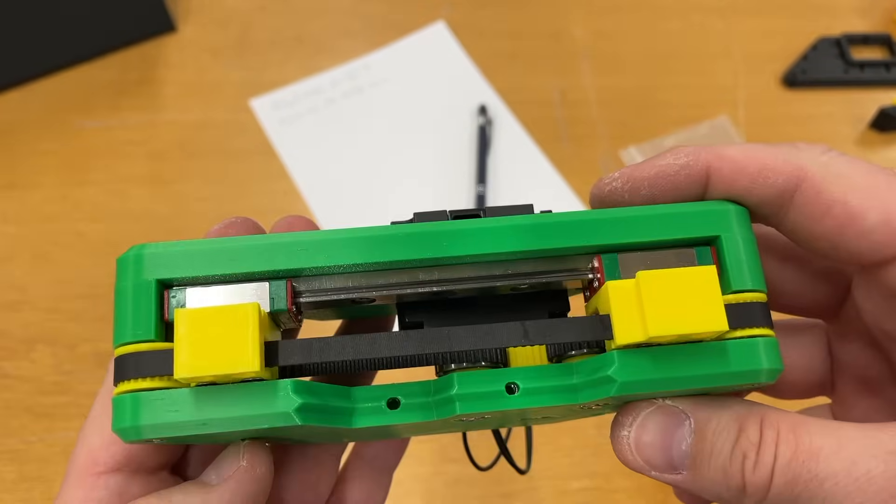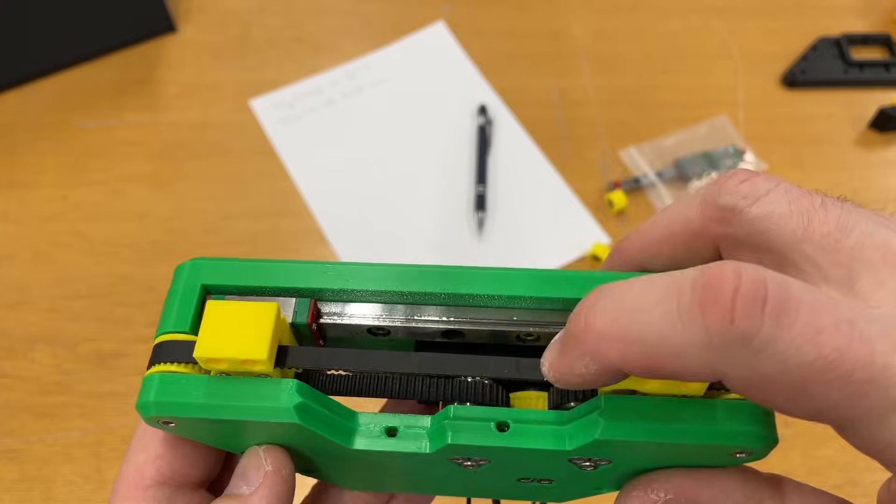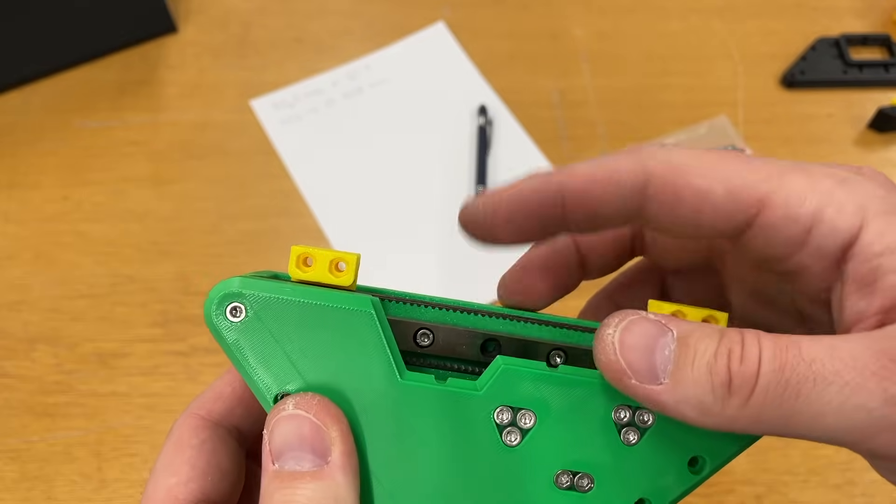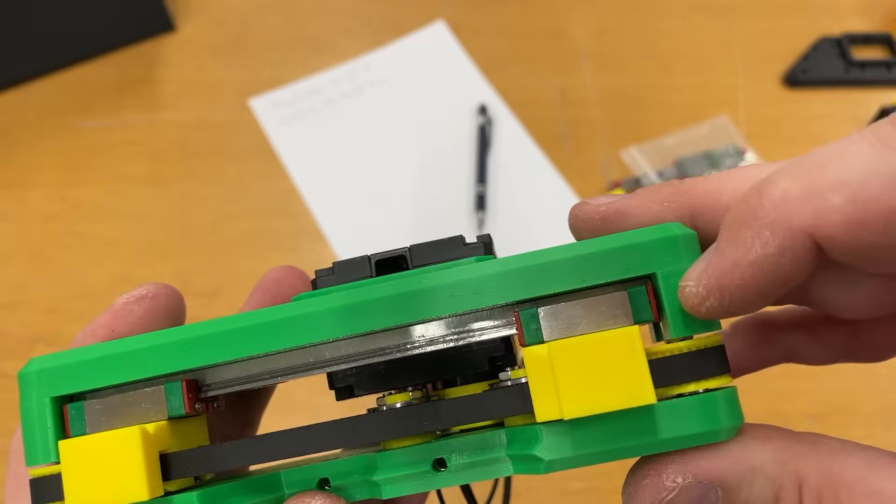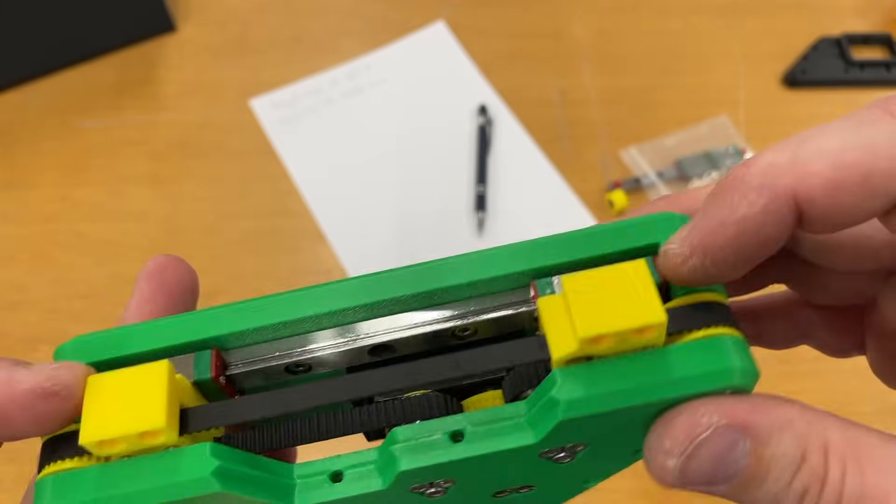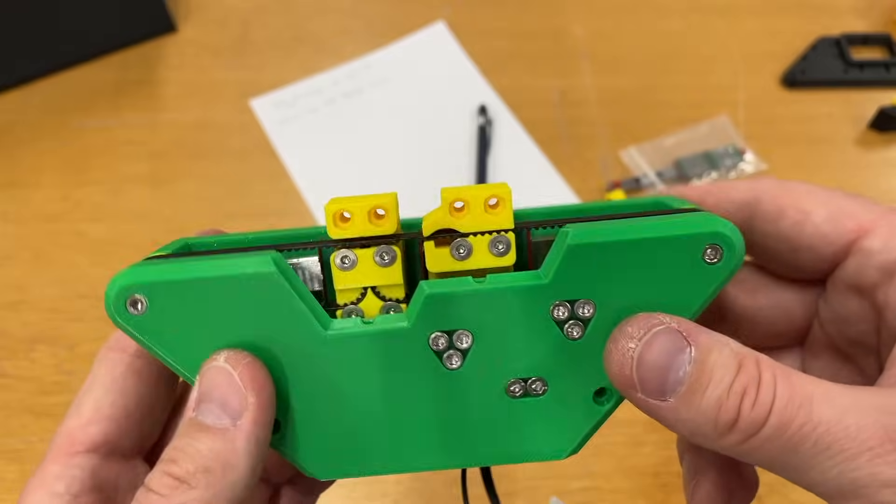After almost one hour assembling and disassembling I have the belt which is I think properly tightened. You see this distance is more or less equal to this one over here. Finally belt is assembled.